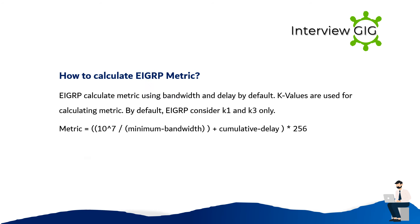How to calculate the EIGRP metric? EIGRP calculates the metric using bandwidth and delay by default. K-values are used for calculating the metric. By default, EIGRP considers K1 and K3 only. The metric equals bandwidth plus cumulative delay, multiplied by 256.